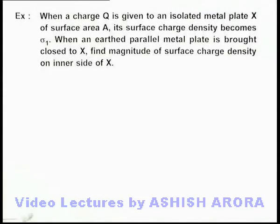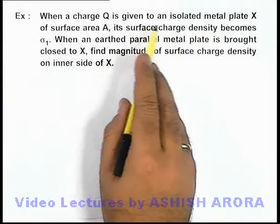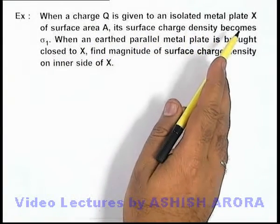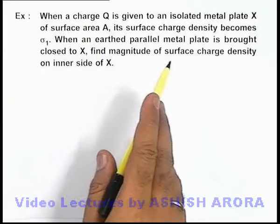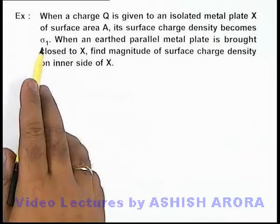In this example, we are given that when a charge Q is given to an isolated metal plate X of surface area A, its surface charge density becomes σ₁.